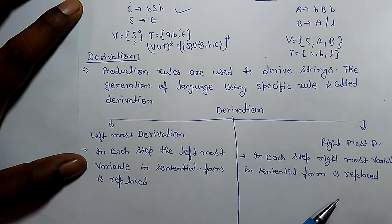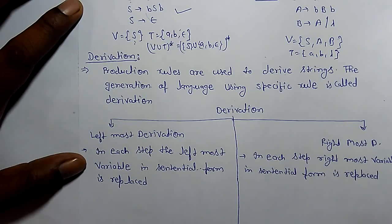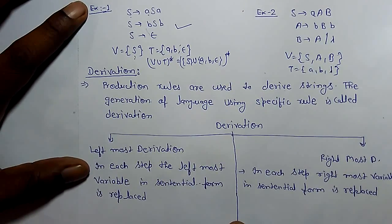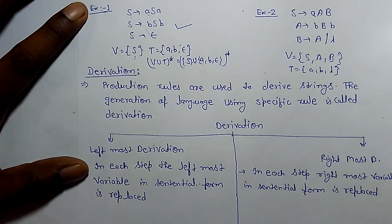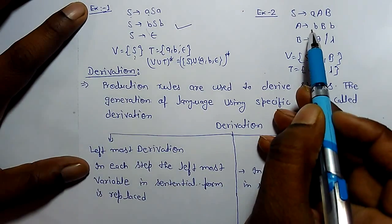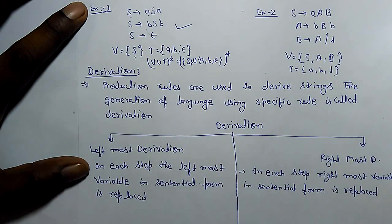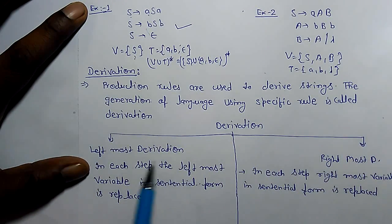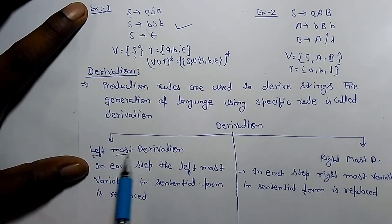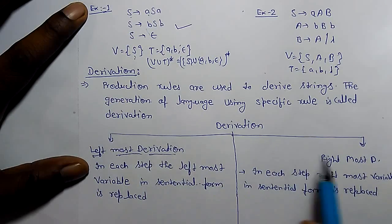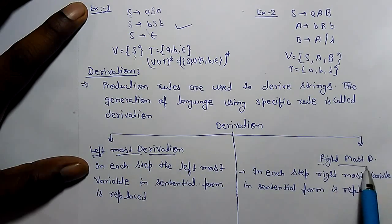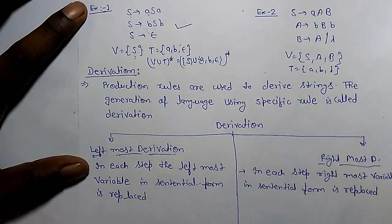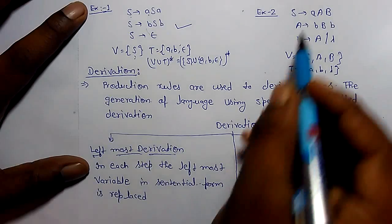Production rules are used to derive strings. The generation of language using a specific rule is called derivation. For example, with this grammar there are two types of derivation: leftmost derivation and rightmost derivation.